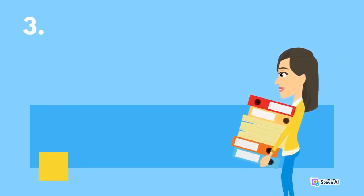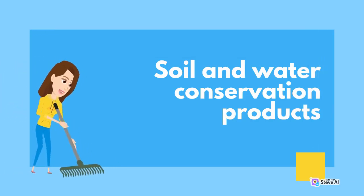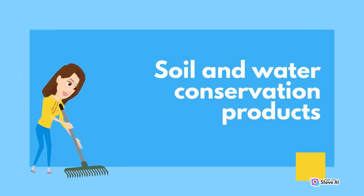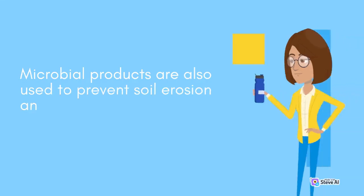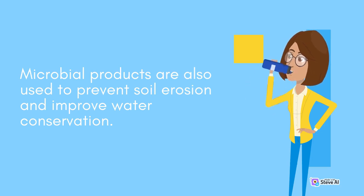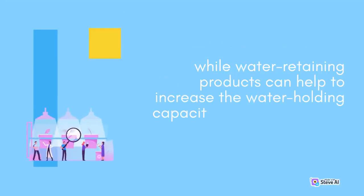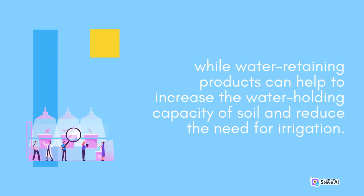3. Soil and Water Conservation Products. Microbial products are also used to prevent soil erosion and improve water conservation. For example, soil-binding bacteria can help destabilize soil and prevent it from being washed away by rain or wind, while water-retaining products can help to increase the water-holding capacity of soil and reduce the need for irrigation.